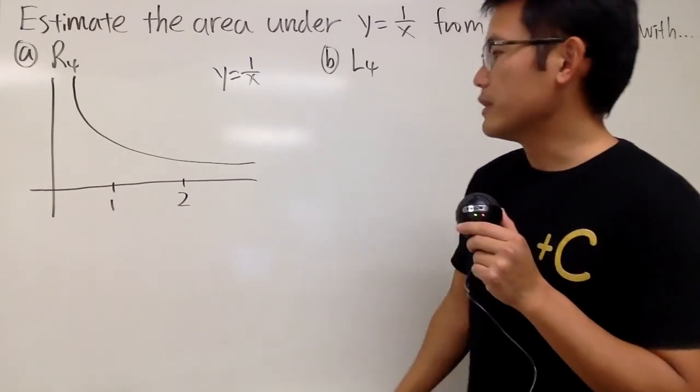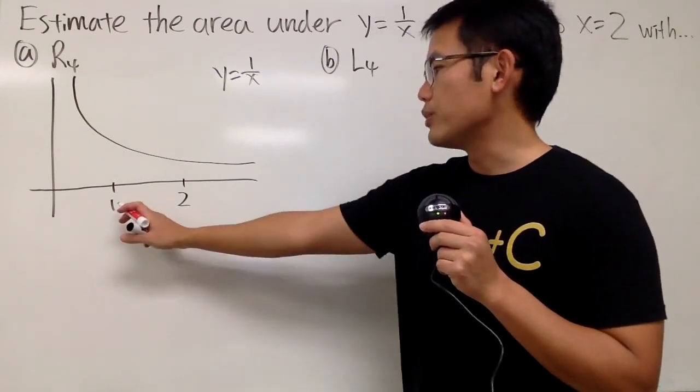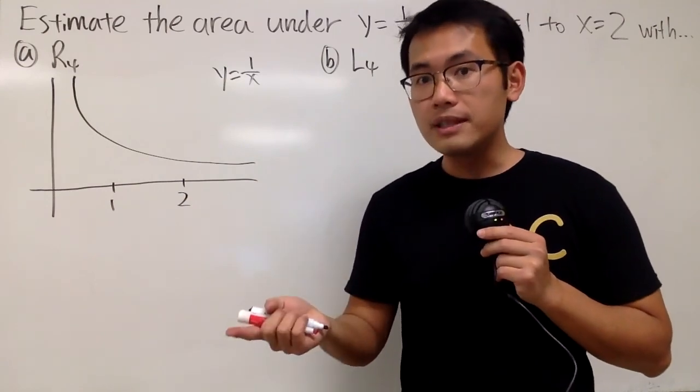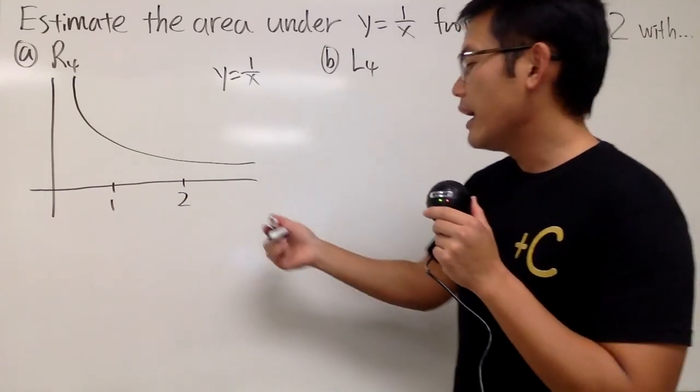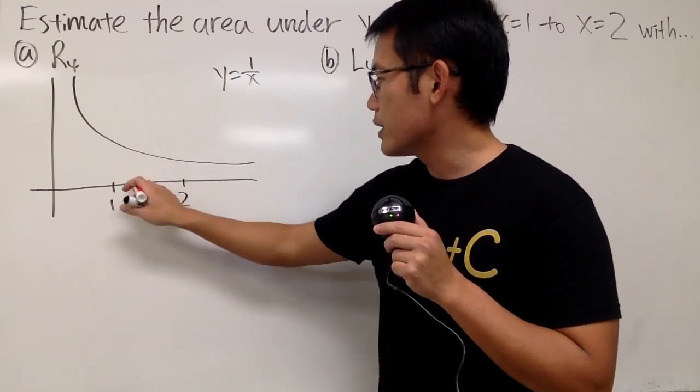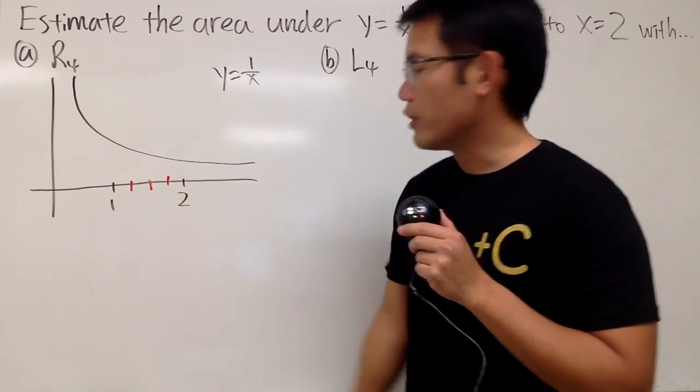This is what we can do first. We have to figure out the width, and this is not so bad to do. From 1 to 2, it's just width 1, dividing 4 pieces, so we have 1 over 4. And you can also draw the picture right here. You cut the middle right here, and then the middle of the middle, and the middle of the middle.